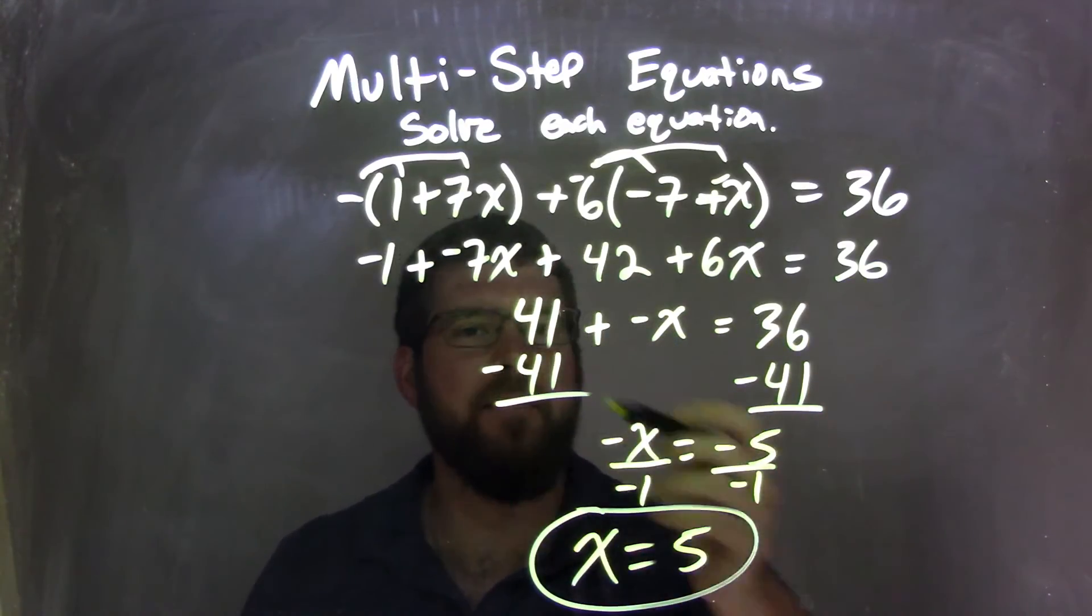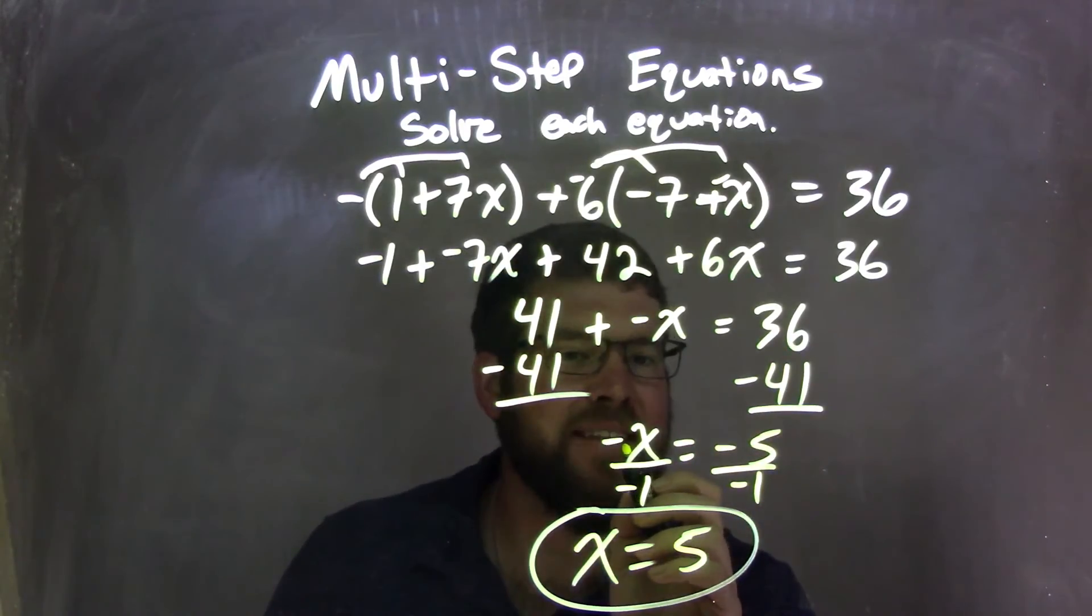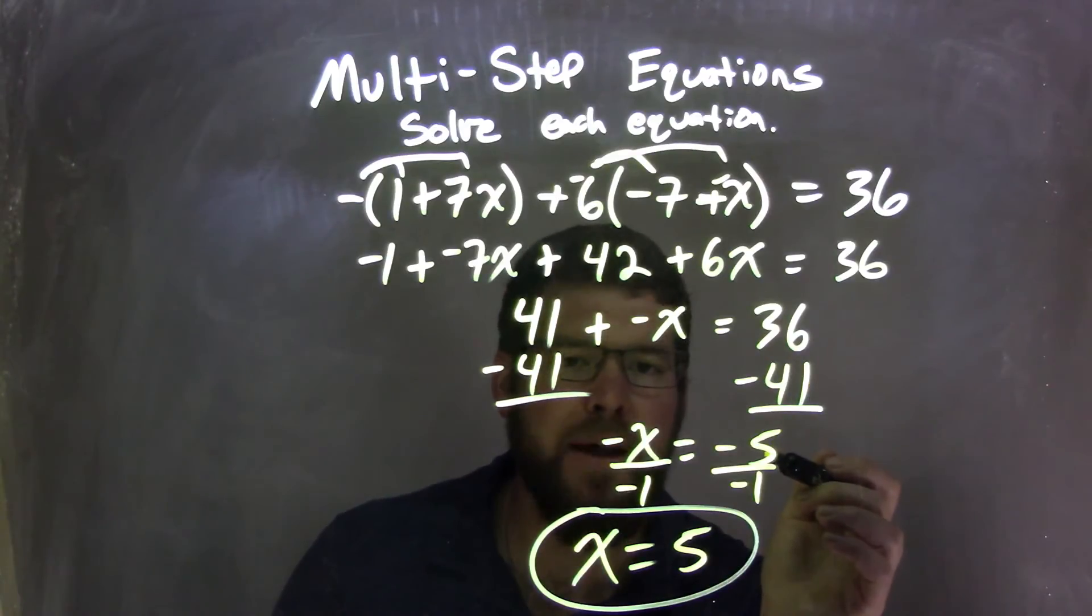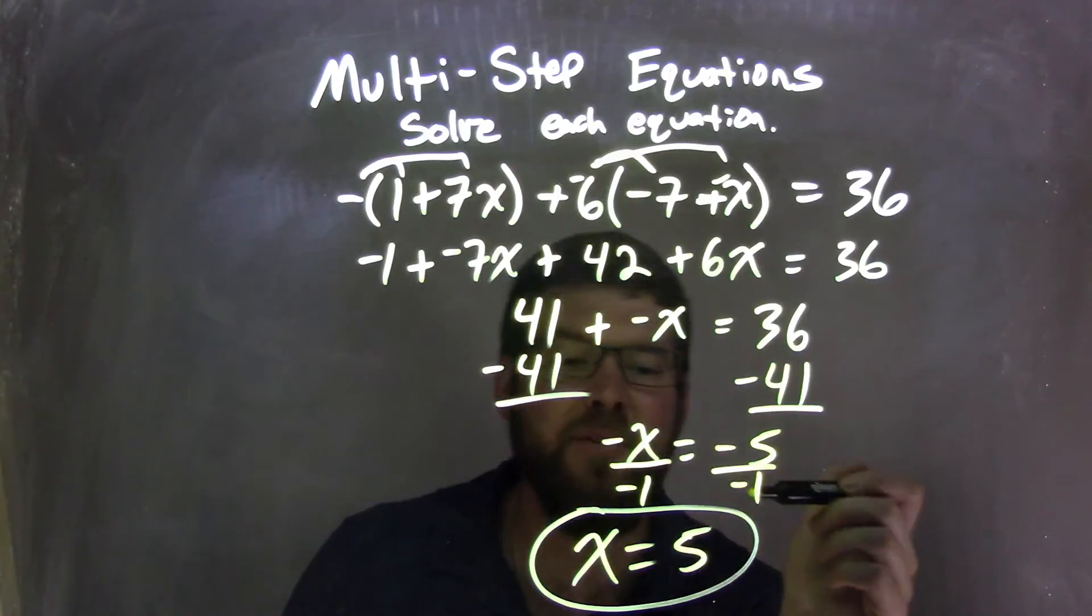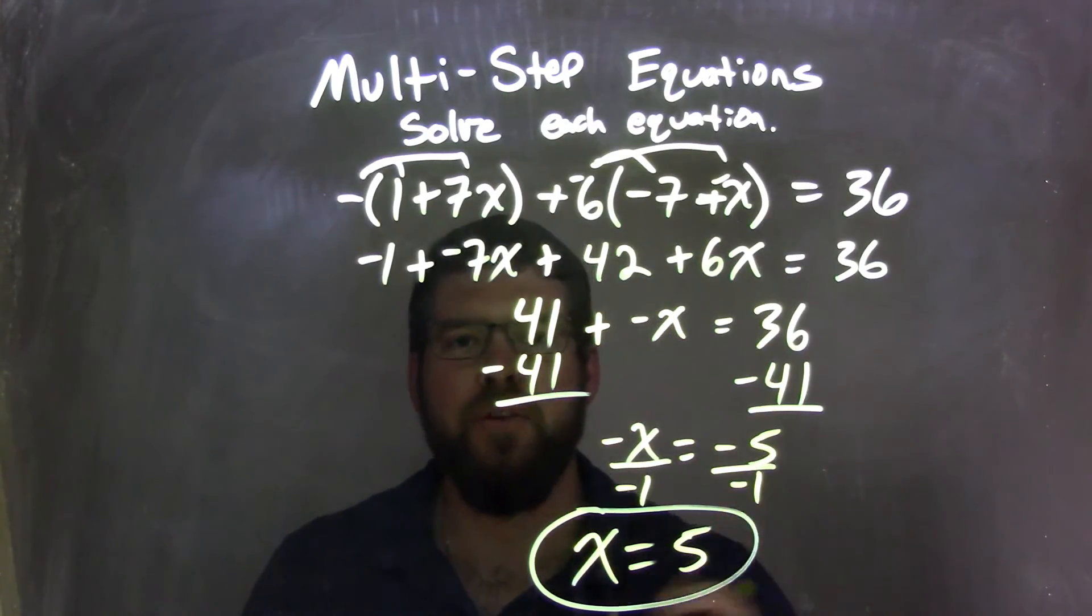I then brought the number to the right. I subtracted 41 from both sides. Leave me a negative x on the left equals 36 minus 41, which is a negative 5 on the right. I then divided by negative 1 to both sides. Leave me with a positive x on the left and a positive 5 on the right, with a final answer of x equals 5.